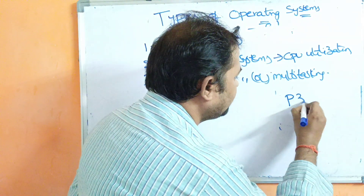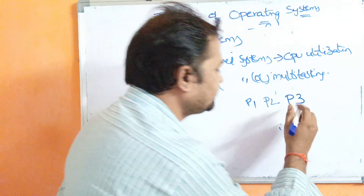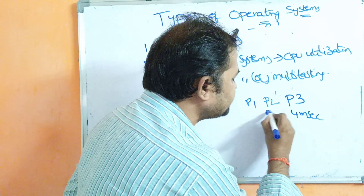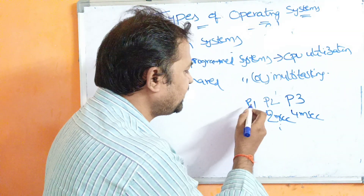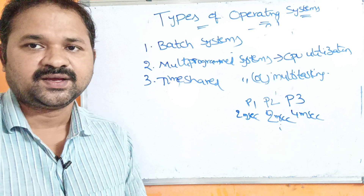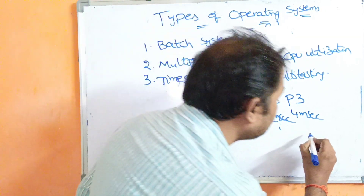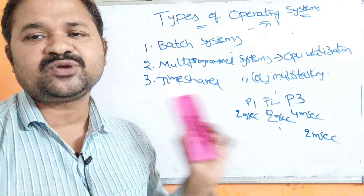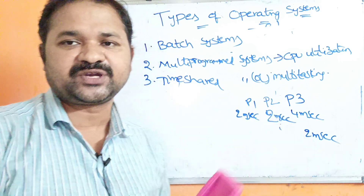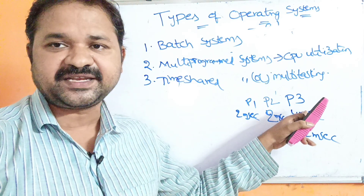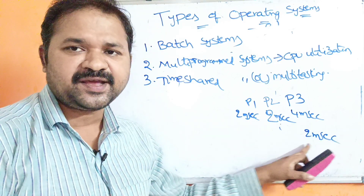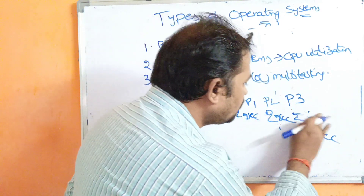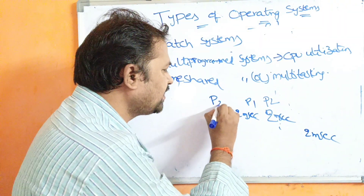Let us assume three processes are in main memory: P3 requires 4 milliseconds, P2 requires 2 milliseconds, and P1 requires 2 milliseconds of CPU time. The operating system allocates a 2-millisecond quantum to all processes. The CPU starts executing P3 — it can run only 2 milliseconds, so P3 executes for 2 ms and the remaining 2 ms of P3 is appended to the end of the list.